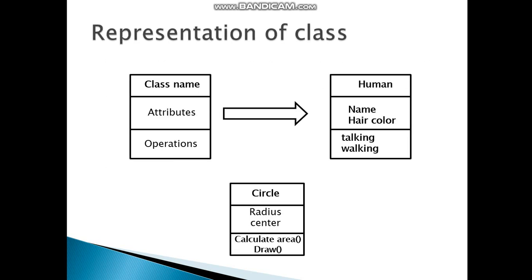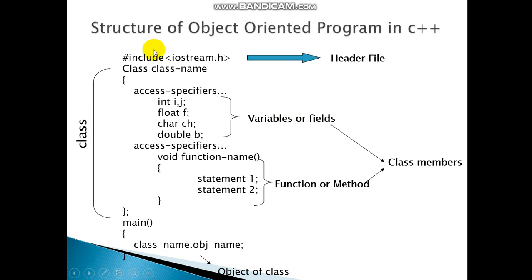Representation of a class: for example, we have a class called 'human'. The data member here is 'name', and the member functions are walking, talking, and so on. This is the structure of object-oriented programming in C++. Here we have the header file, class name, variable fields, class members, and all the class names. It is very easy to understand.